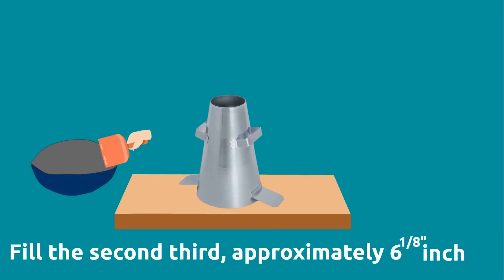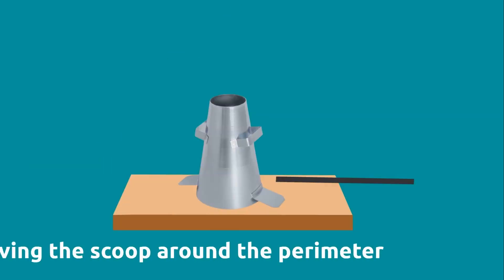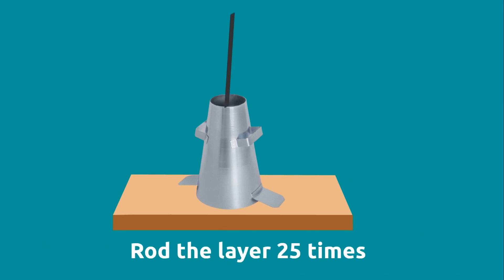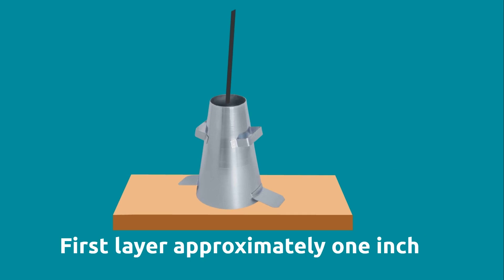Next, fill the second third, approximately 6 and 1/8 inches of the cone by volume, moving the scoop around the perimeter. Rod the layer 25 times, making sure to penetrate into the first layer approximately 1 inch.